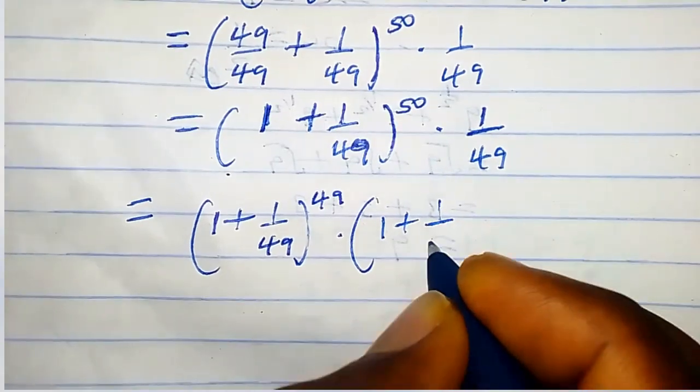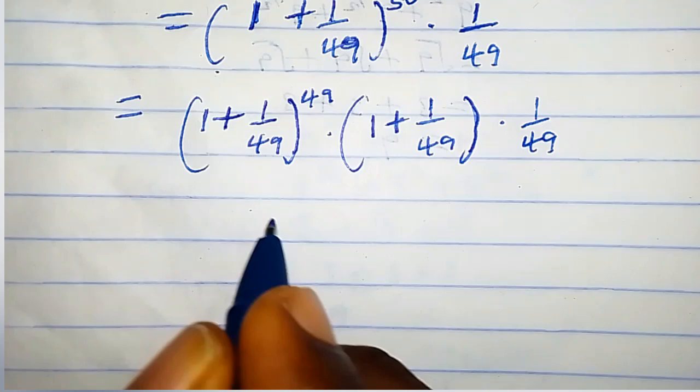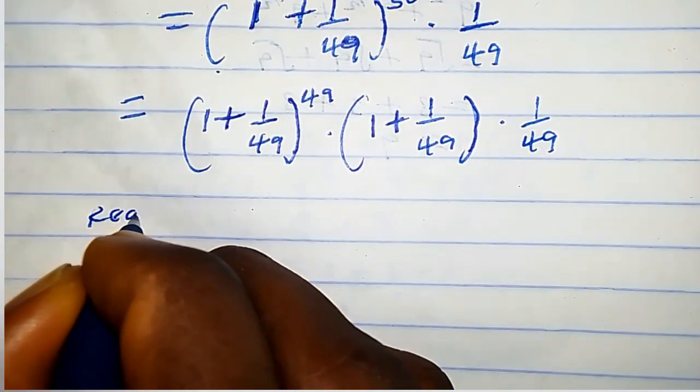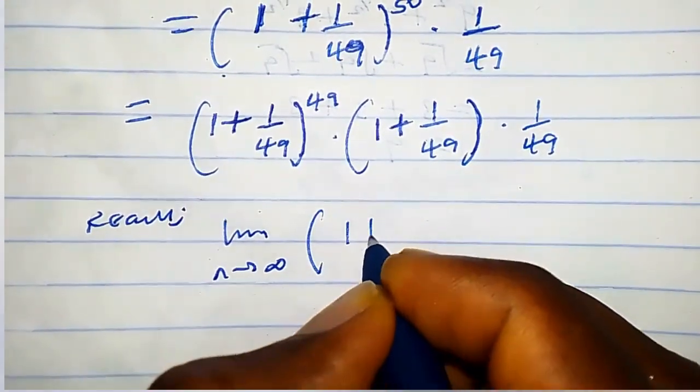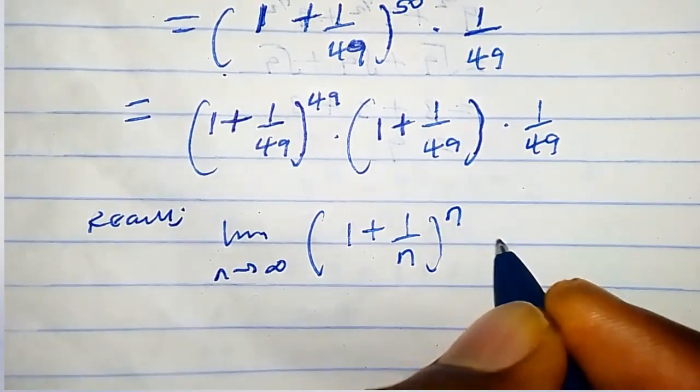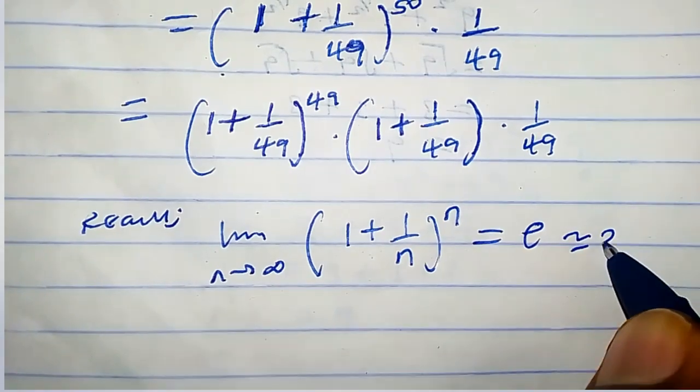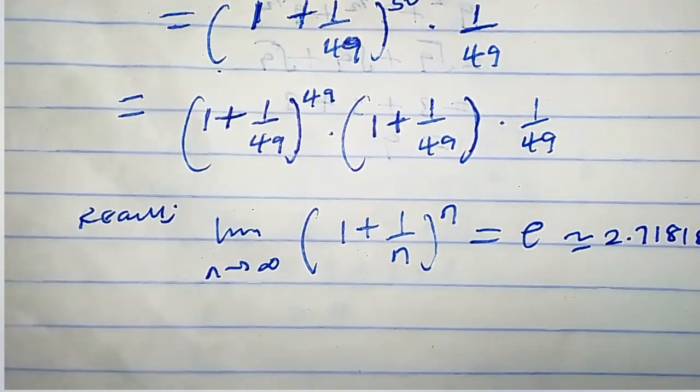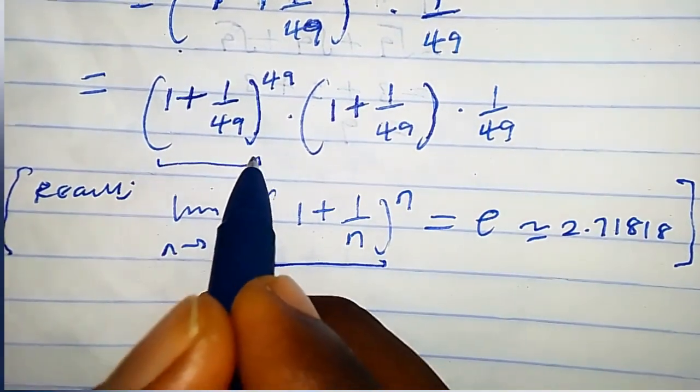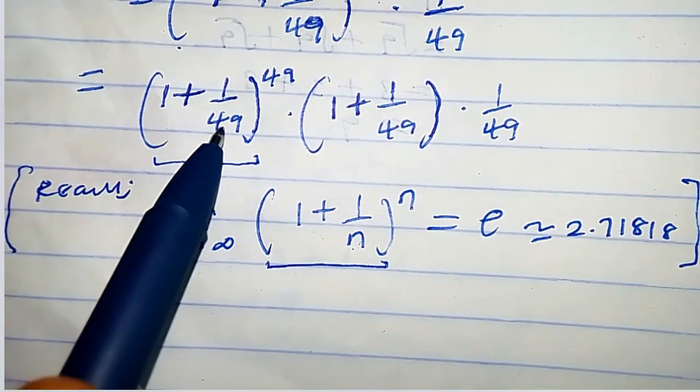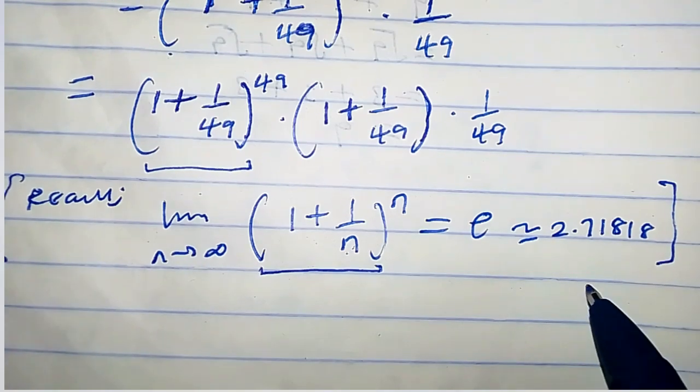Now let's recall something. Recall that the limit as n tends to infinity of (1 plus 1 over n) to the power n is equal to the Euler number e, and this Euler number is approximately equal to 2.71818 and so on. You will observe that this looks like what we have here. Our n is just 49, and note that 2.71818 is less than 3.